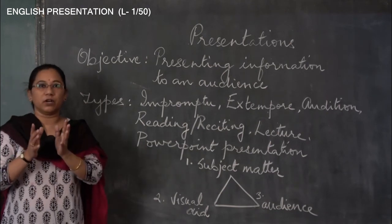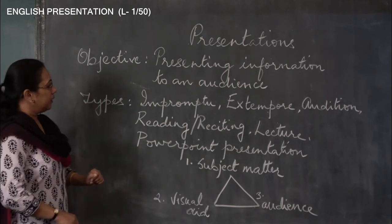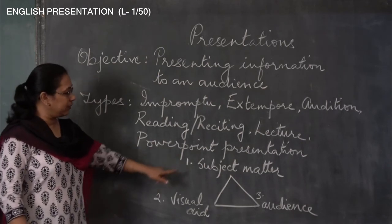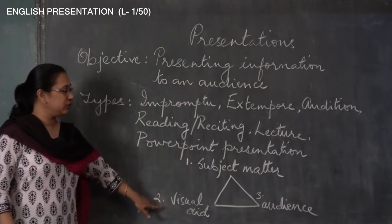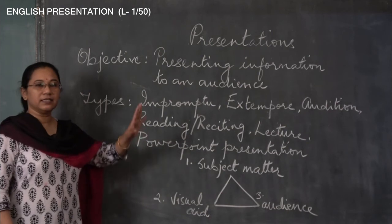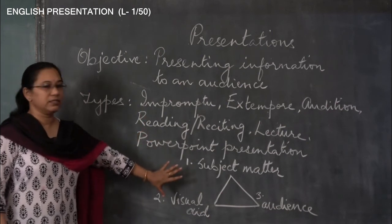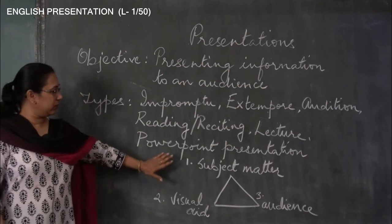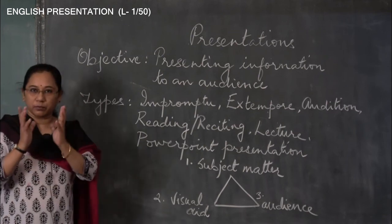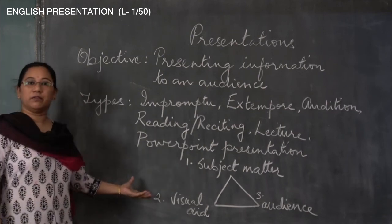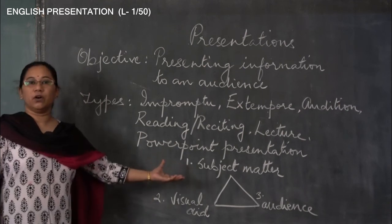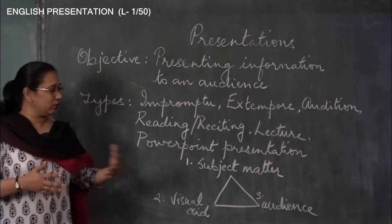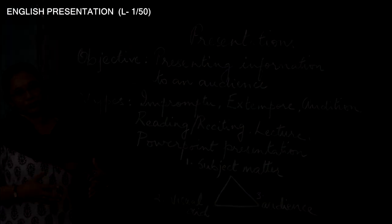The first thing to understand is the triangle between subject matter, visual aid, and audience — these are the three most essential elements in a presentation. I'll talk in detail about how to prepare the subject matter, what visual aids are, and the role of the audience in a PowerPoint presentation. I hope you'll want to listen to more in the next episode. Thank you.